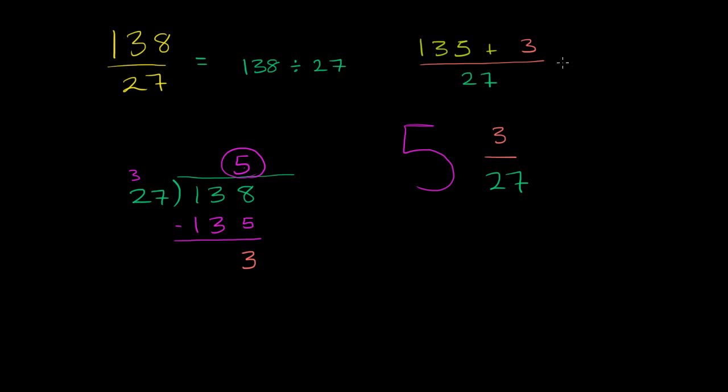Now this part right over here, this is equal to 135 over 27 plus 3 over 27. And this simplifies to 5. So 5 and 3 27ths. There we go.